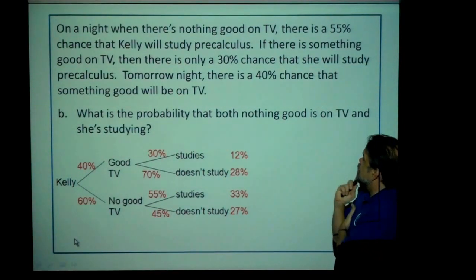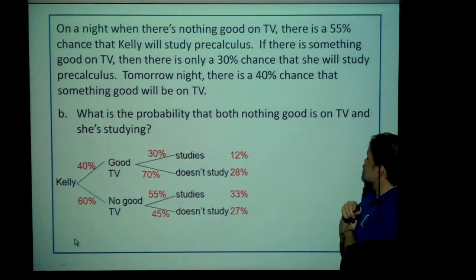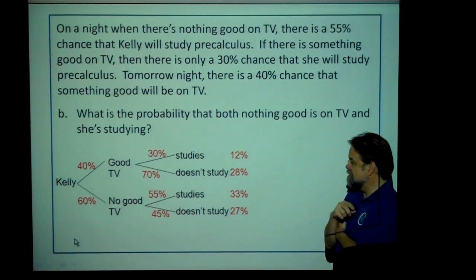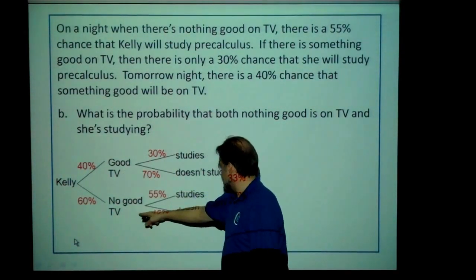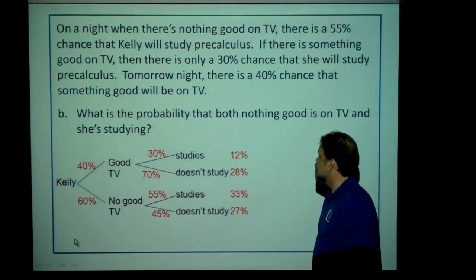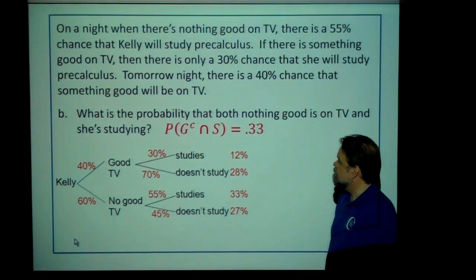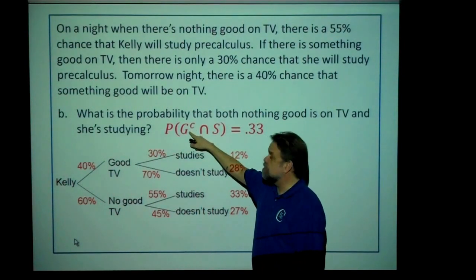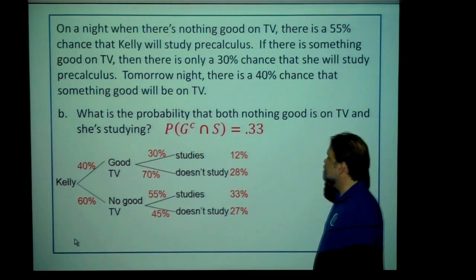Question B: what's the probability that both nothing good is on TV and she's studying? Easy. No good TV, she studies: 33%. So the probability of the complement of good TV and she studies is 33%.